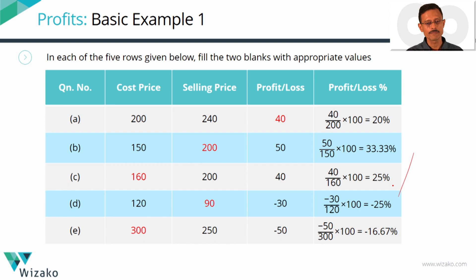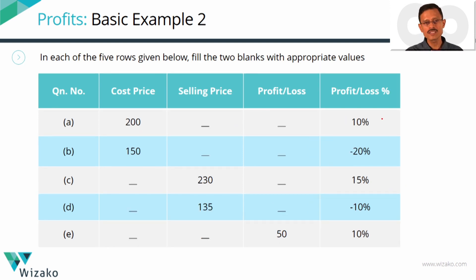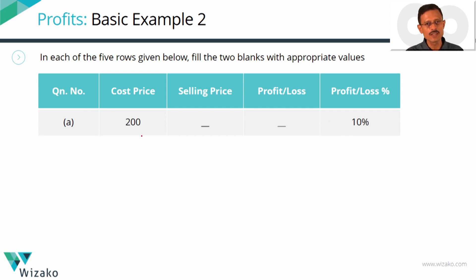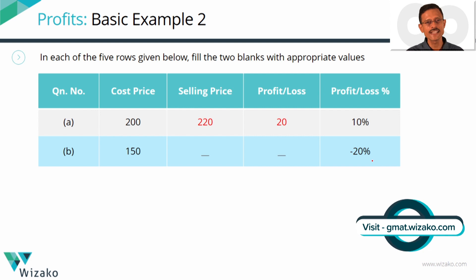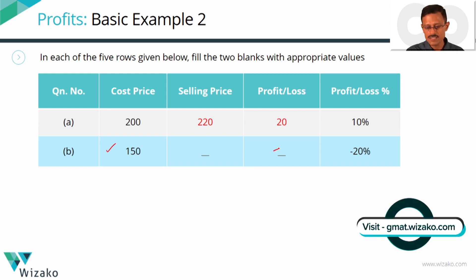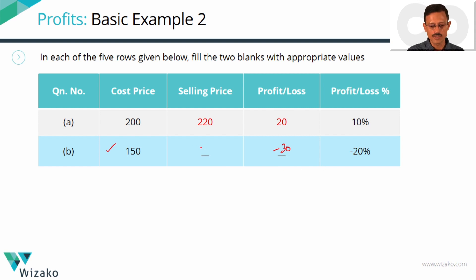We'll do one more exercise. Here I've given you the percentage profit or loss, and we need to fill in the two blanks. Pause and complete the five rows, then come back. Row 1: profit is 10% and cost price is 200. Since profit percentages are of the cost price, 10% of 200 is 20, so selling price = 200 + 20 = 220. Row 2: loss is 20%, cost price is 150. 20% of 150 is 30, so the merchant sells at 120.